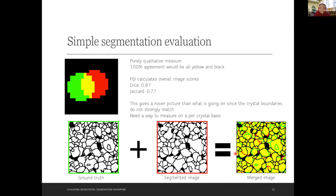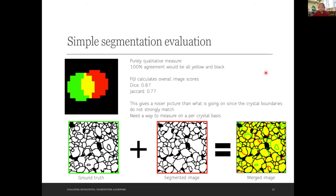Question: just to be clear, does deep learning only work with manual training input — doesn't that defeat the purpose? Once you manually annotate a dataset and train the model, you can then run it on millions of images and even back-process. It saves time in the long run.